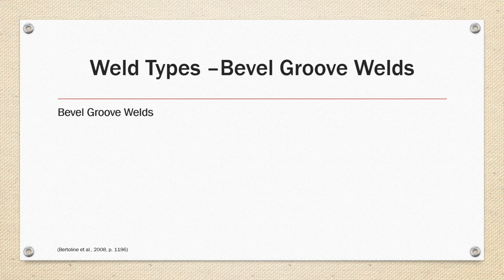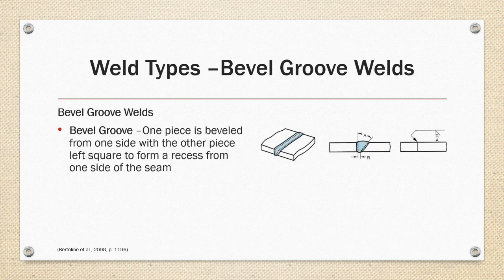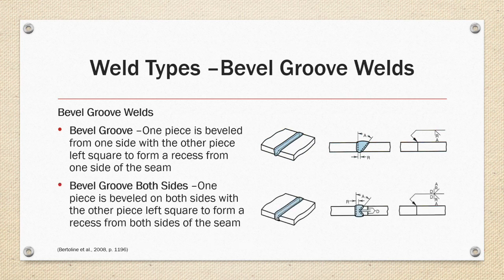Bevel groove welds are similar to a V-groove, but one piece is beveled on one side and the other piece is left square, forming a recess from one side of the seam. The bevel on one piece is defined by angle A with spacing between the plates defined by R. In a bevel groove from both sides, one piece is beveled on both sides and the other is left square, forming a J-shape recess on both sides, with welding performed from both sides as denoted by symbology on both sides of the reference line.